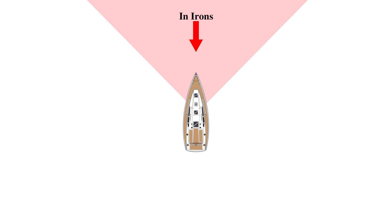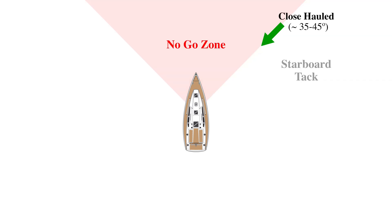When the wind comes from directly ahead, the boat is unable to sail, and we call this being in irons. The boat has to sail at an angle to the wind, with the sails acting like wings and generating lift. More to come on this principle when we get into the theory of sailing.